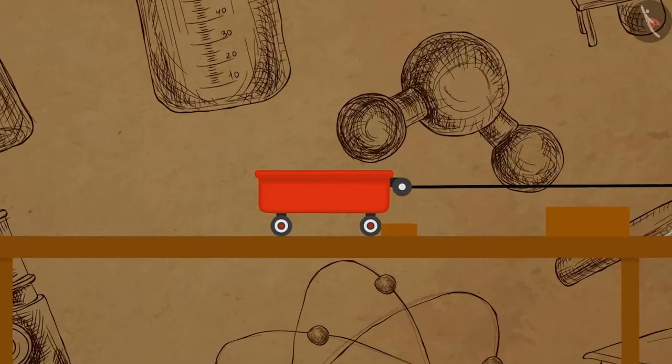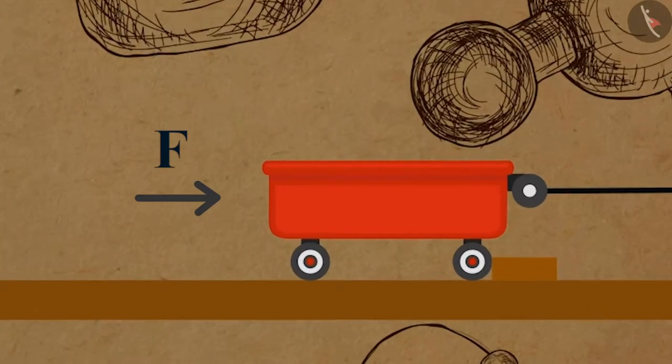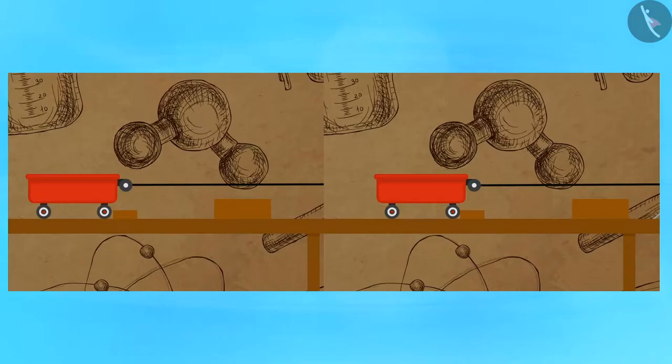Trolley does work and so it possesses energy. The moving object is capable of doing work.